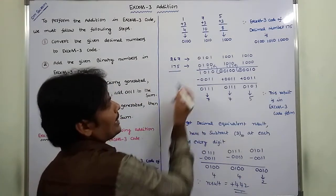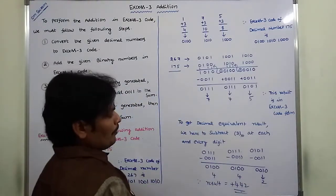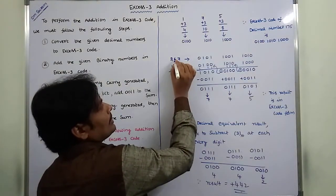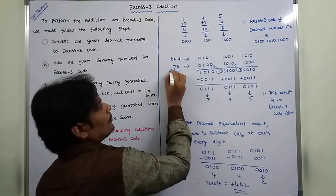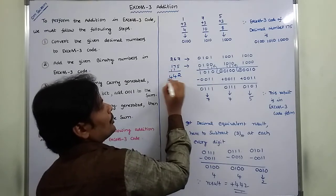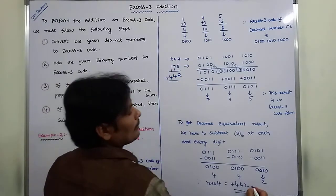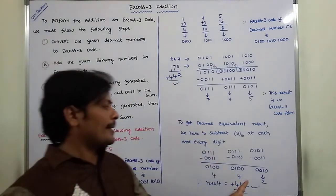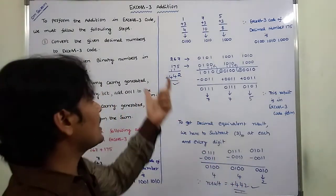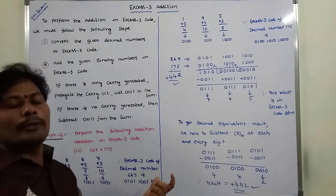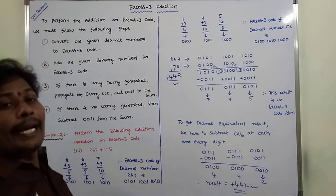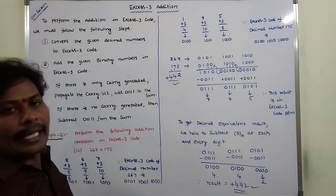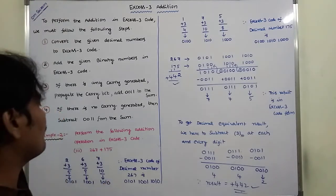We can verify the answer: 7 plus 5 is 2 with carry 1; 7 plus 6 plus 1 is 4 with carry 1; giving the result 442. Both answers are the same. In this way, we solve the example problem on XS3 addition. Thank you for watching this video. If you like this video, please share it with your friends and classmates and subscribe to the channel.